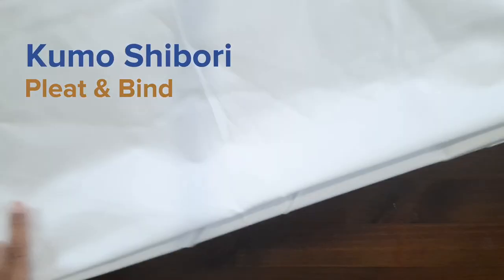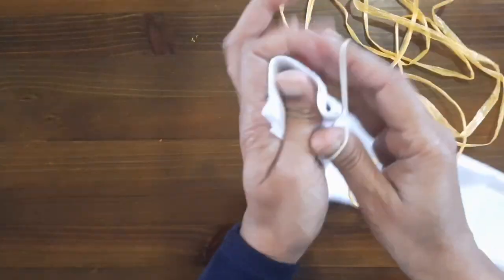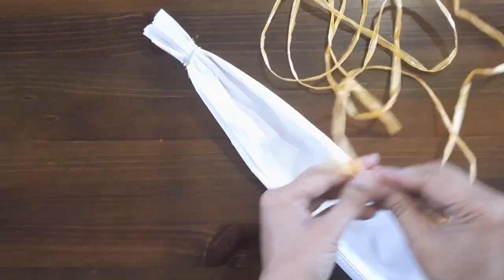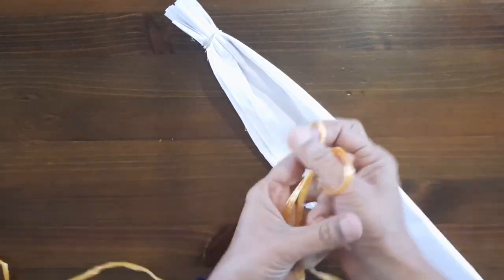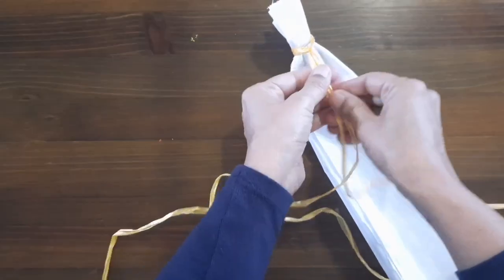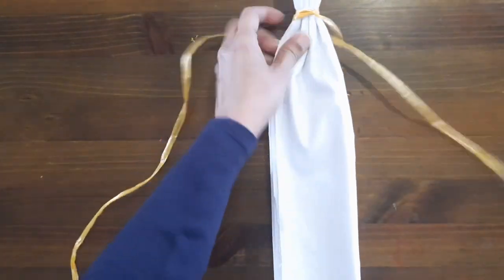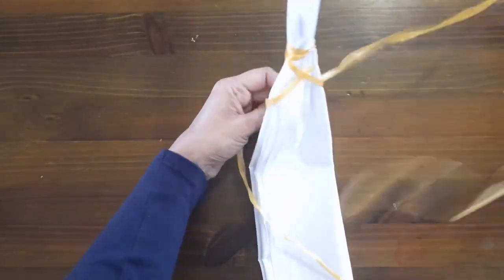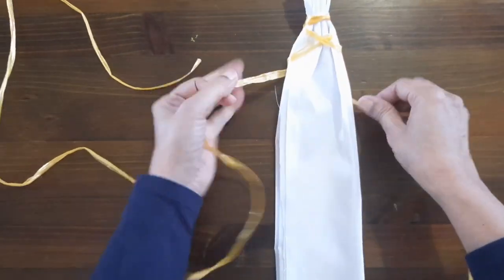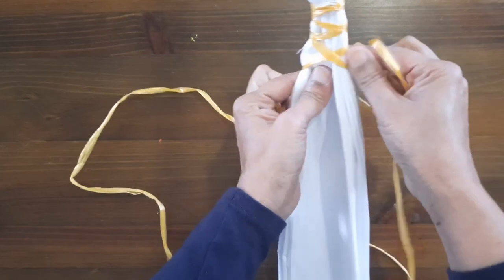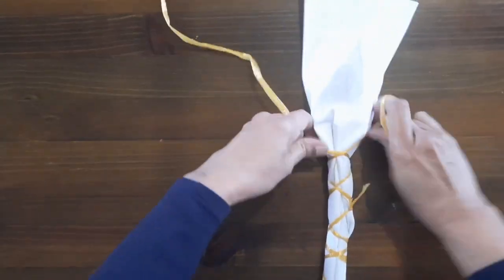Let's move on to kumo shibori. Now this is a pleat and bind technique. I'm making a narrow fan folding and then I'm going to use the polypropylene raffia or the plastic raffia. You can use any cord that you have available. First of all I would tie one side of the fabric with a rubber band, that would help me to keep it in its place, and then join the two ends together to fold it in equal lengths, and then start wrapping it over and under. It's like winding or twisting, and in that way you twist or bind the whole fabric.